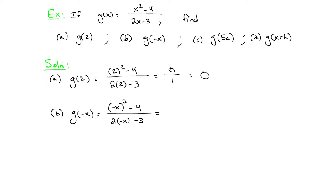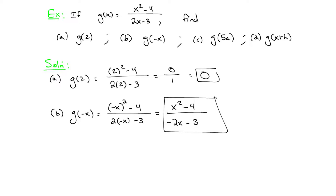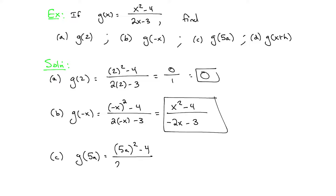Simplifying g(-x): (-x)² is just x², so the numerator is x² - 4, and the denominator is -2x - 3. That's as far as we can simplify. Part c: g(5a) means input 5a for every x. We get ((5a)² - 4) / (2(5a) - 3). Remember, 5 also gets squared. Simplifying: (25a² - 4) / (10a - 3).